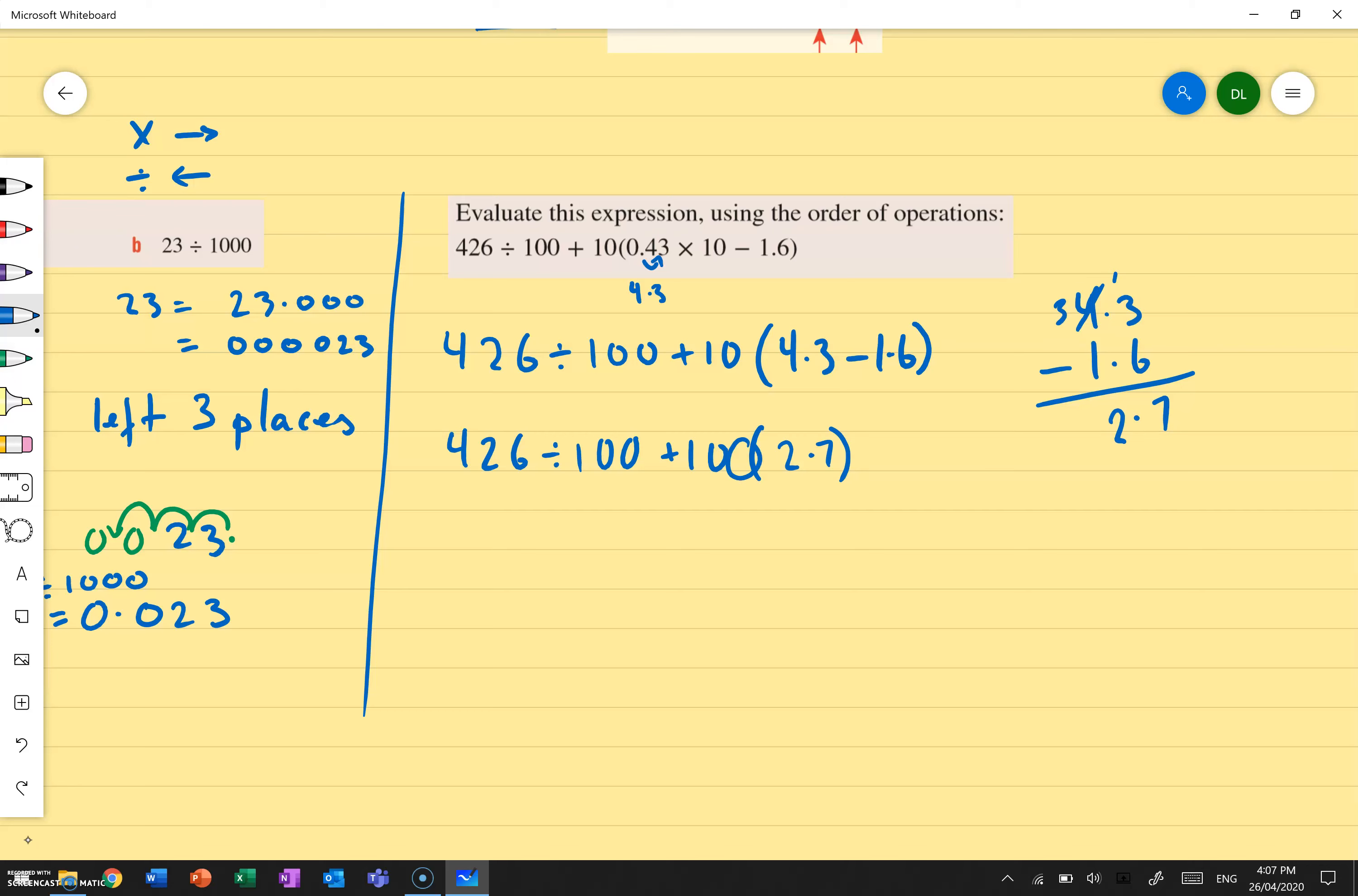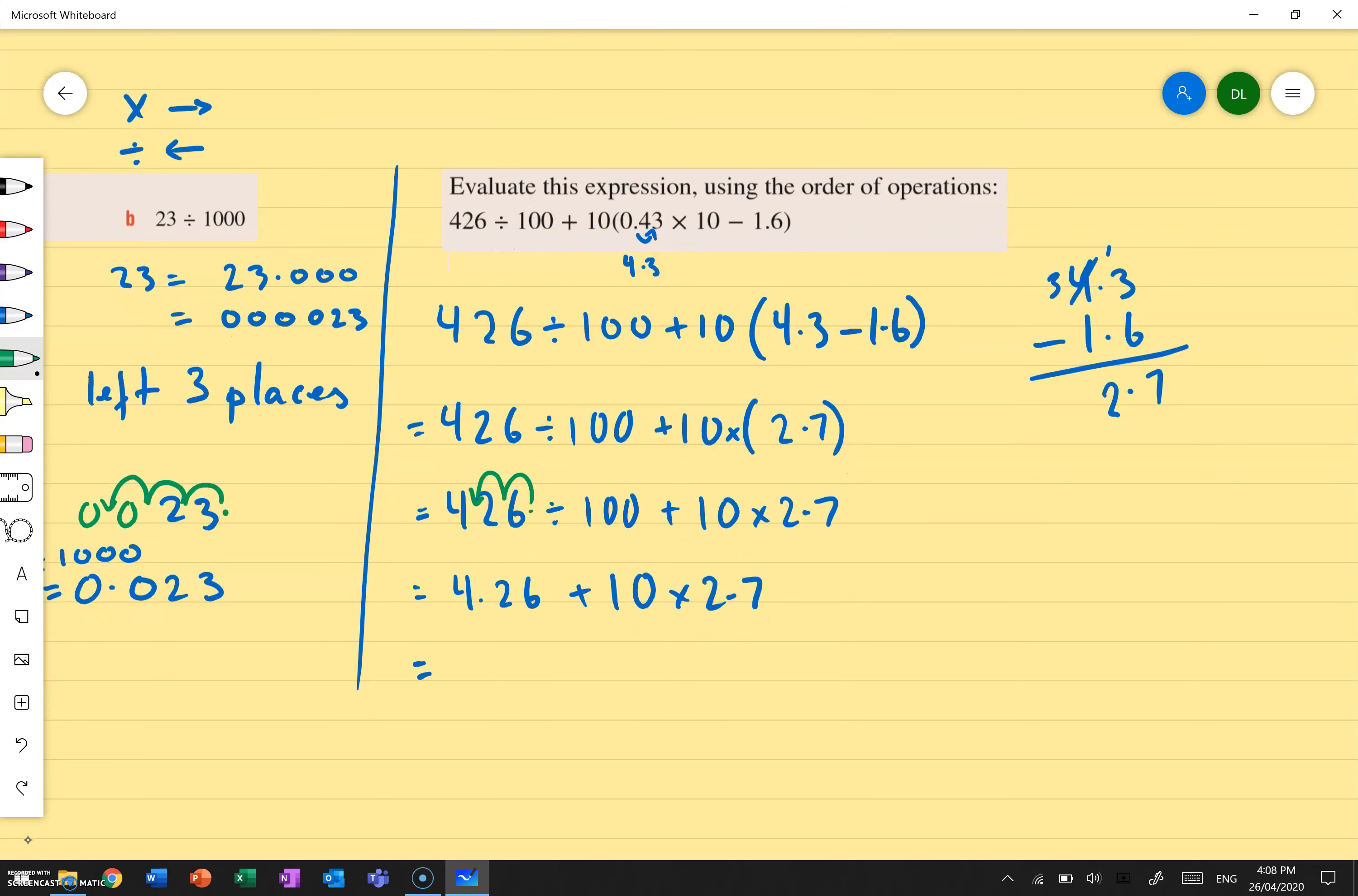Now, what does it mean if there's nothing here in between? It means it's a multiplier. So now I've got 426 divided by 100 plus 10 times 2.7. So let's go from left to right. What's 426 divided by 100? So divided by 100 means I move the decimal point to the left. 1, 2. Then there's 10 times 2.7. So I'm going to move it right one time. And then end up with 4.26 plus 10 times 2.7 gives me 27. I add them together.